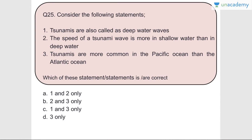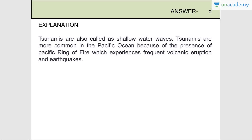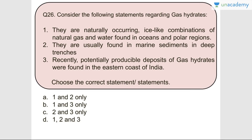Question number twenty-five: Consider the following statements. Tsunamis are also called deep water waves - wrong, they are called shallow water waves. The speed of a tsunami wave is more in shallow water than in deep water - wrong. Tsunamis are more common in the Pacific Ocean than the Atlantic Ocean - correct. Answer is D, three only. Tsunamis are more common in the Pacific Ocean because of the presence of the Pacific Ring of Fire, which experiences frequent volcanic eruptions and earthquakes.